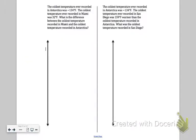Alright, so I see here I have two problems side by side. They're very similar with one really important difference that we're going to pay attention to. The left side says the coldest temperature ever recorded in Antarctica was negative 134 degrees. The coldest temperature ever recorded in Miami was 32 degrees. What I want to do is mark those two pieces of information on my number line.